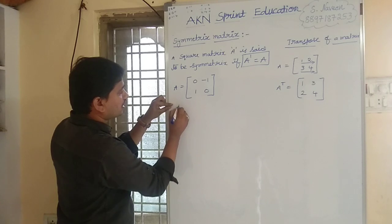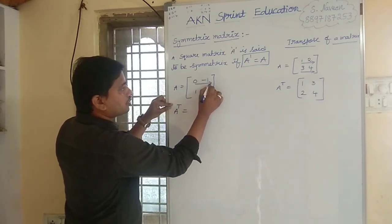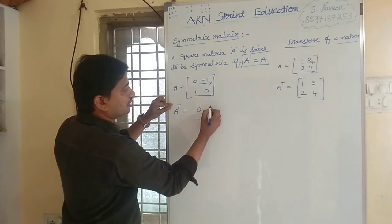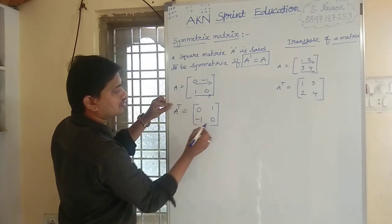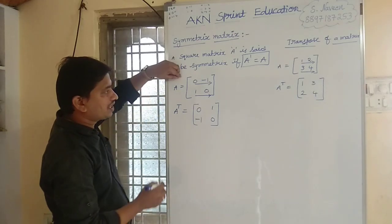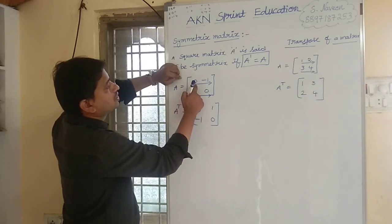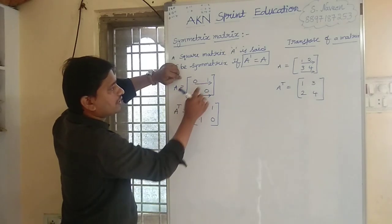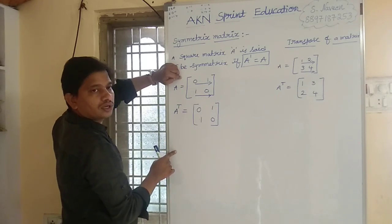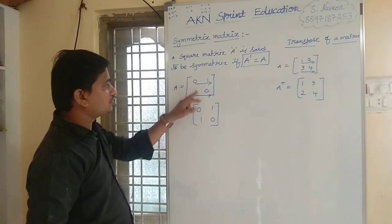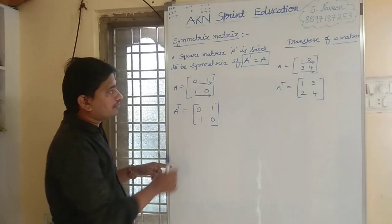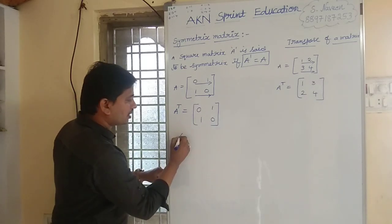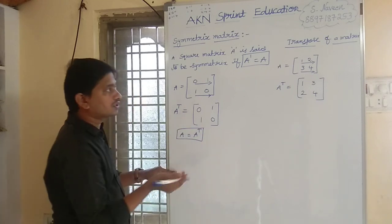A transpose is obtained by changing rows into columns. If you observe here, A equals 0, 1 and 1, 0. A transpose is also 0, 1 and 1, 0. Both matrix A and A transpose are the same. If A equals A transpose, that is called a symmetric matrix.